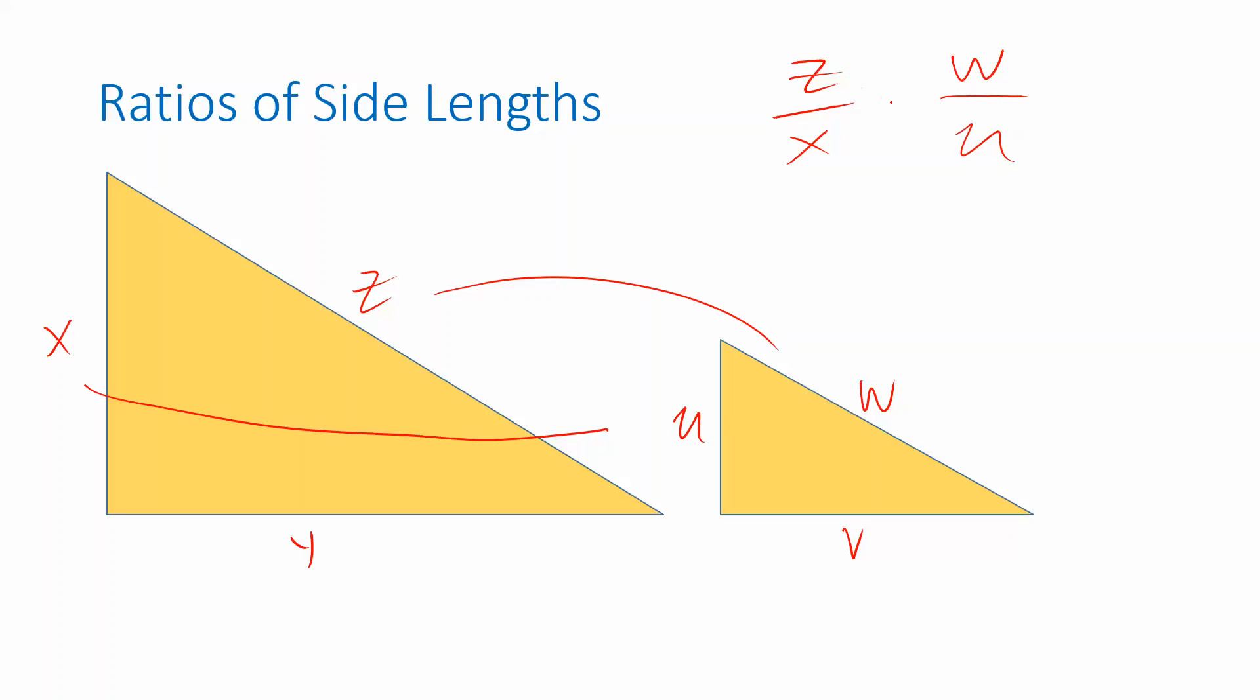Which means that the fractions you get here, these ratios, are the same. And it doesn't have to be twice as big. If it's three times as big or half as big, then you're going to get a certain value when you divide the length of z by the length of x. But as long as the triangles are similar, then doing the corresponding ratio in the other triangle will give you the same result.